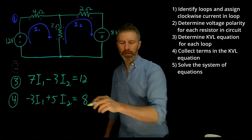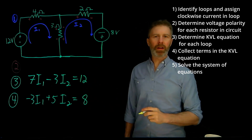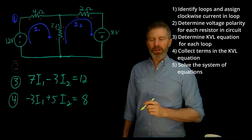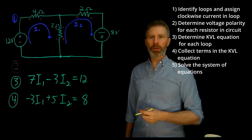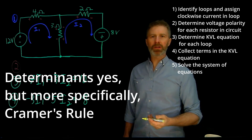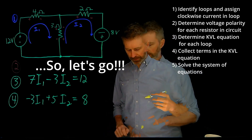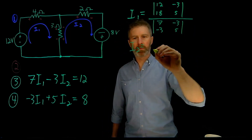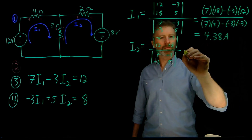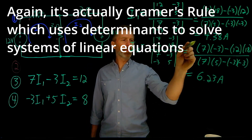Step four reduces the problem to two equations with two unknowns, I1 and I2, which we can solve as a small system of linear equations. There are lots of ways to do it — substitution, determinants, or a solver program. In this case I'm going to use determinants. I won't go through the full method here, but that process gives us our values for I1 and I2.